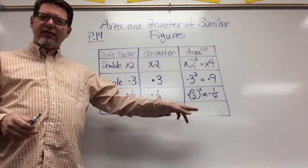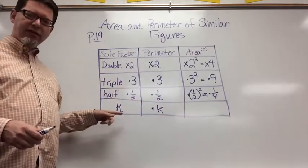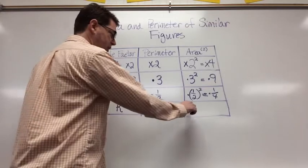But what's going to happen to my area if my scale factor is K? I think you got it right, we're going to multiply by K squared to find the new area.